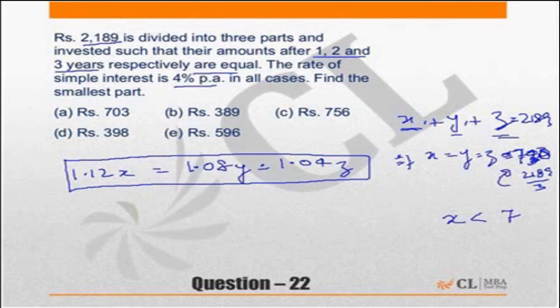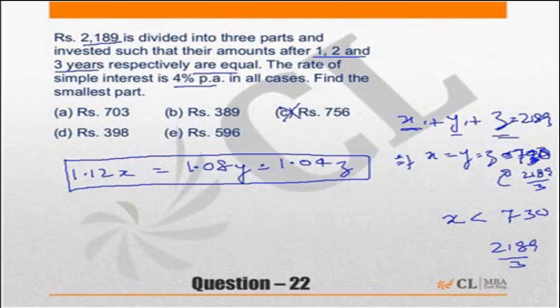So all C is incorrect. But in this case the three of them are not equal. So the smallest part should be less than 730 and the biggest part should be more than 730. So in other words the answer cannot be 756, choice C is incorrect. Now let's proceed further with this question.